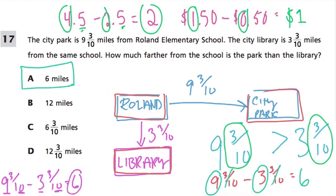But if you don't like that, we can turn each of these into improper fractions. To do that, we say 10 times 9 is 90 plus 3. That's 93 tenths. That's just converting this to an improper fraction. Then we subtract 33 tenths. And all I did there was take 10 times 3 plus 3. That's the formula I used. You multiply the denominator by the whole part and add the numerator.